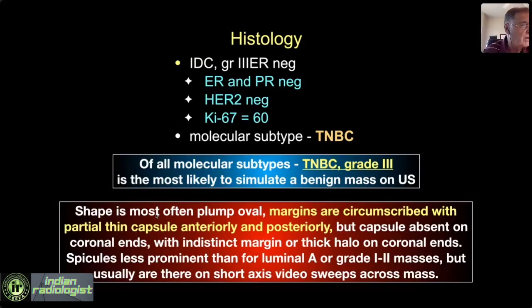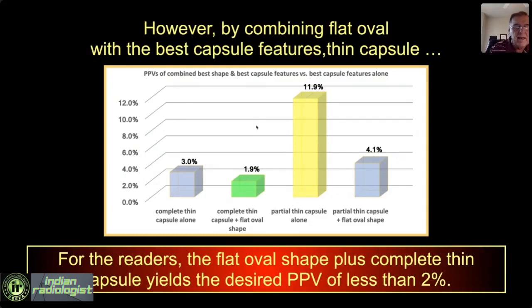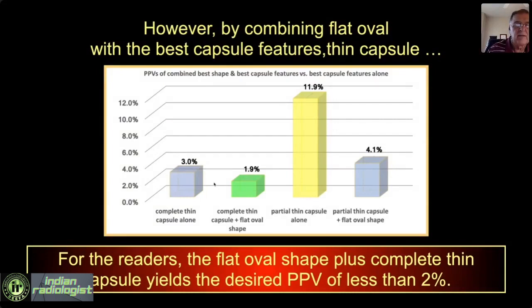This is a reason I've become a big advocate of storing radial, anti-radial, and short axis video sweeps through the lesion and reading from them instead of two still images. Data shows no single feature can achieve a false negative rate of less than 2%: flat oval alone gives 6.6% FNR; complete thin capsule alone gives 3% FNR. Only by combining a truly oval shape with a complete thin capsule can we arrive at less than a 2% false negative rate.